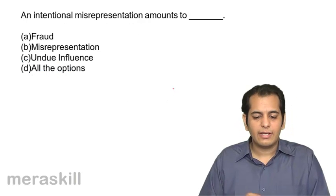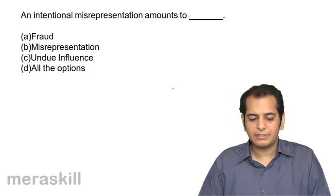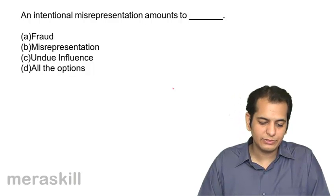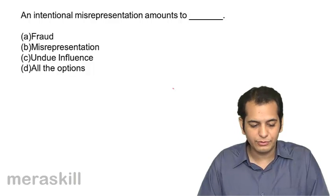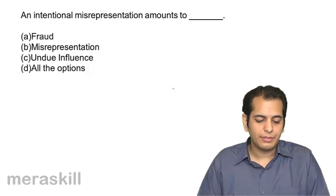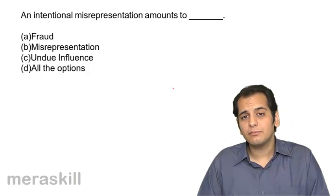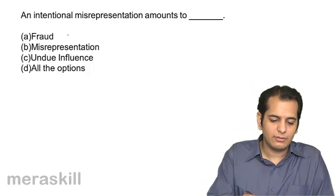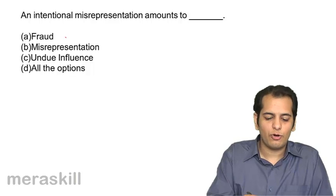An intentional misrepresentation amounts to: A fraud, B misrepresentation, C undue influence, D all of the above. Intentional misrepresentation means there is an intention to deceive, so it becomes fraud. The answer is A — fraud.